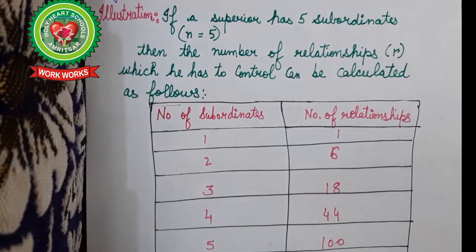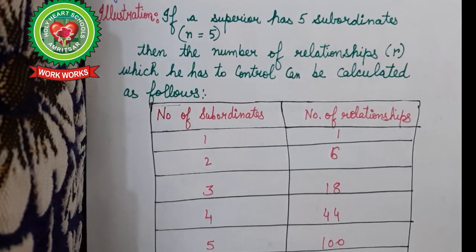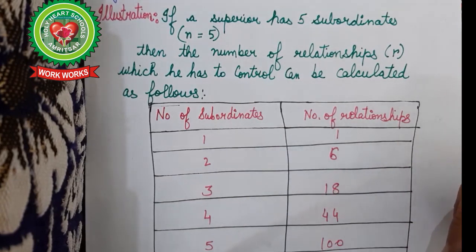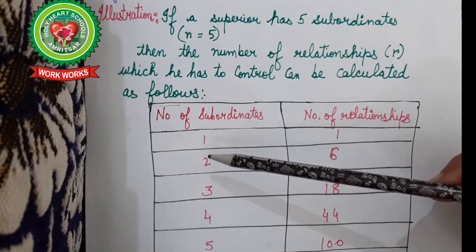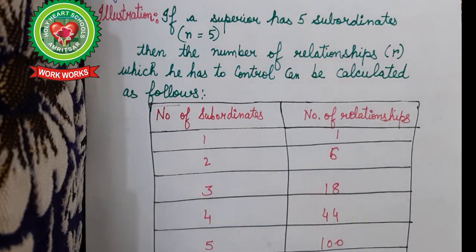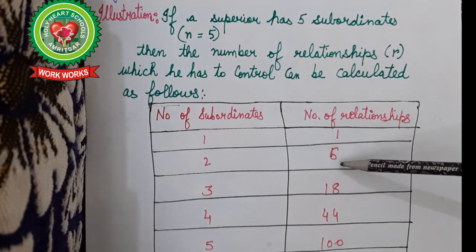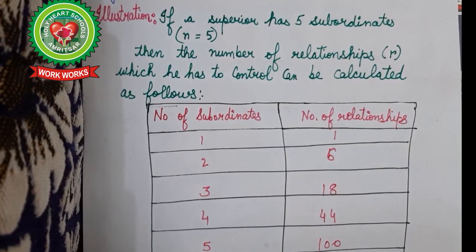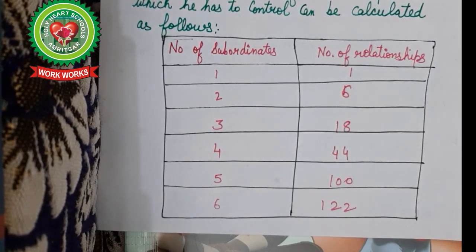Let us do an example. If a superior has 5 subordinates, N equals 5. Using the formula, here are the values for different numbers of subordinates: when N is 1, R is 1; N is 2, R is 6; N is 3, R is 18; N is 4, R is 44; N is 5, R is 100; and when N is 6, R is 222. As the number of subordinates increases, the number of relationships increases dramatically.